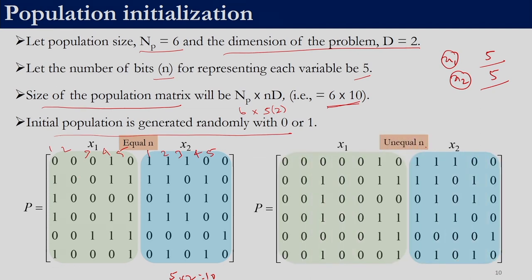If we choose unequal bit lengths — say 7 bits for x1 and 5 bits for x2 — with 6 solutions, the problem dimension will be 12 columns: 7 for the first variable and 5 for the second. There will be 12 columns and 6 rows. Despite having only a 2-variable problem we must work with 12 columns because we have converted a real problem into a binary problem.